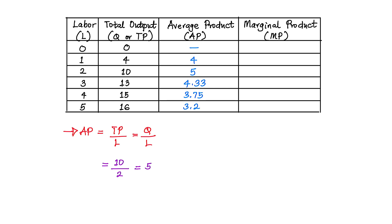And we are done with the calculation of the average product — or we may call it the average product of labor or the average output. Next, let's calculate the marginal product, or the marginal output per labor used.